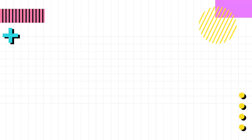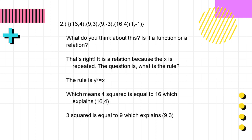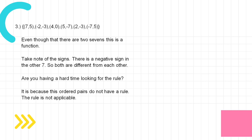Another example: it's a relation because the x is repeated. The rule is y squared equals x, which means 4 squared equals 16 — explaining (16,4) — and 3 squared equals 9 — explaining (9,3). Here's another example: even though there are two 7s, this is a function. Take note of the signs — there is a negative sign on one of the 7s, so both are different from each other. This ordered pair does not have an applicable rule.